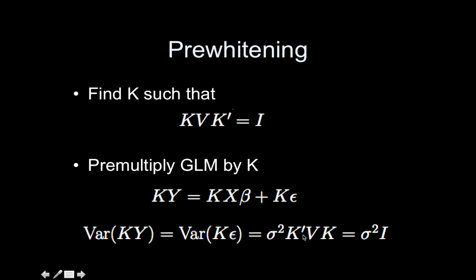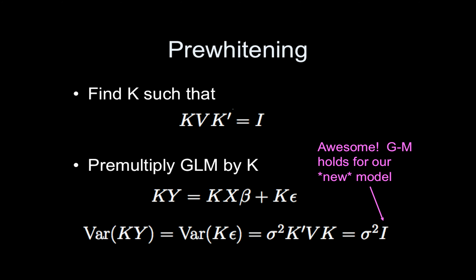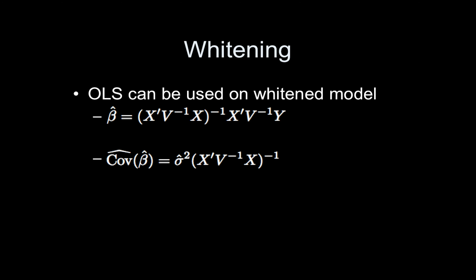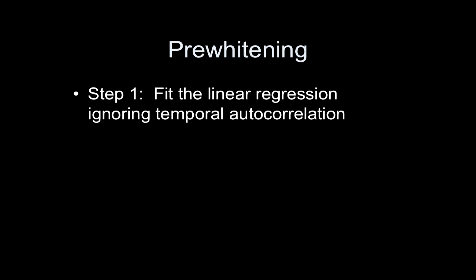That's the big assumption: that this K exists and that we've estimated it perfectly. We're not going to estimate K perfectly, which is why in the early 2000s pre-whitening wasn't very popular — estimating K from noisy data is difficult. But if we can do this, our pre-whitened model satisfies the Gauss-Markov conditions. We can then use OLS to get our betas, with K-transpose K equaling V-inverse inserted into the beta-hat formula and the covariance of beta-hat.